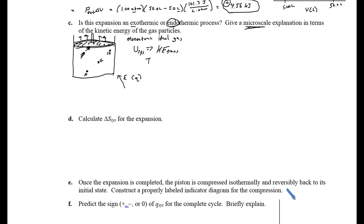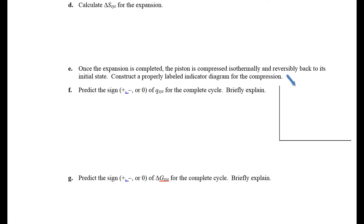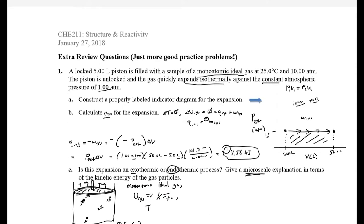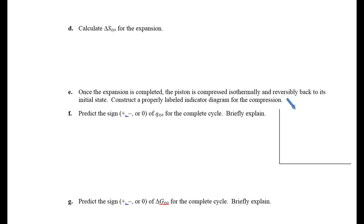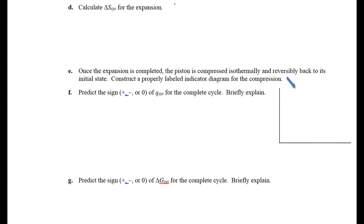Now let's look at the entropy of the system for this expansion. Looking back at the problem, the number of moles wasn't given — so we use the ideal gas law: n = PV/RT. Cranking that out gives approximately 2.04 moles of gas. That's like 10²³ particles running around, confined to five liters at the beginning.